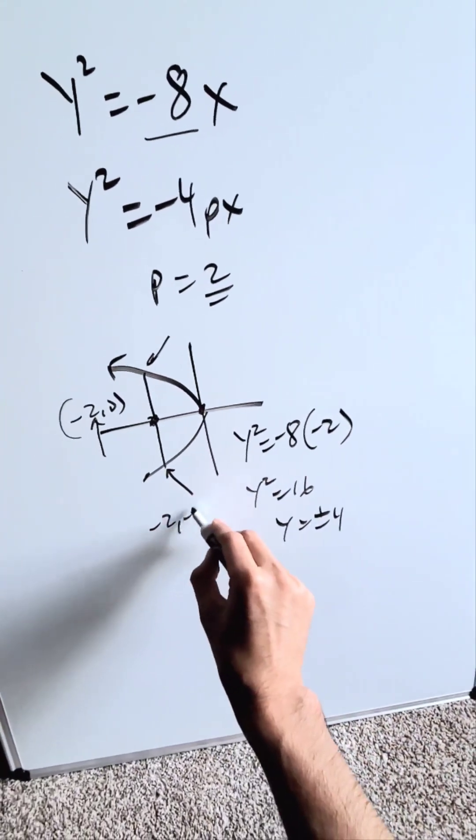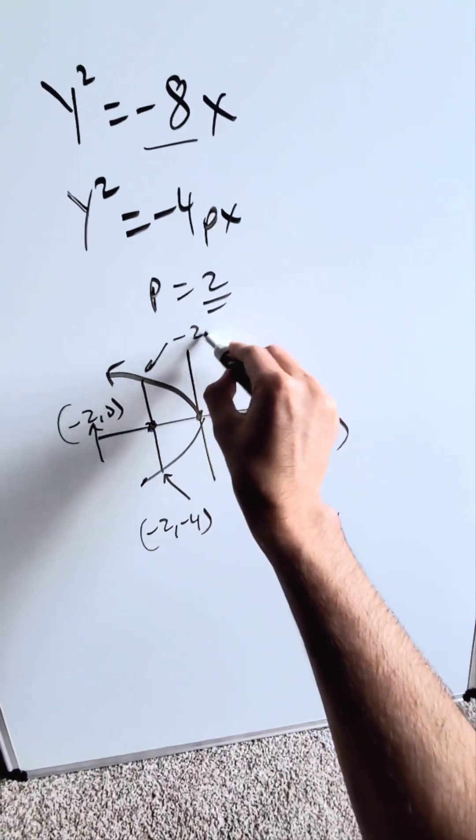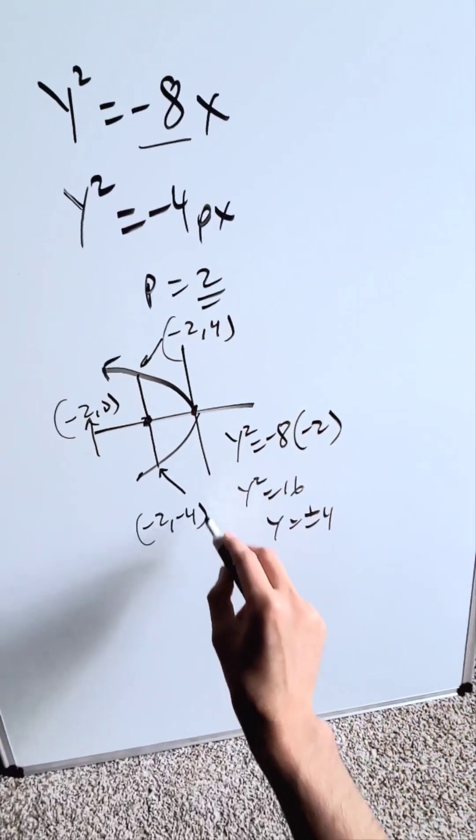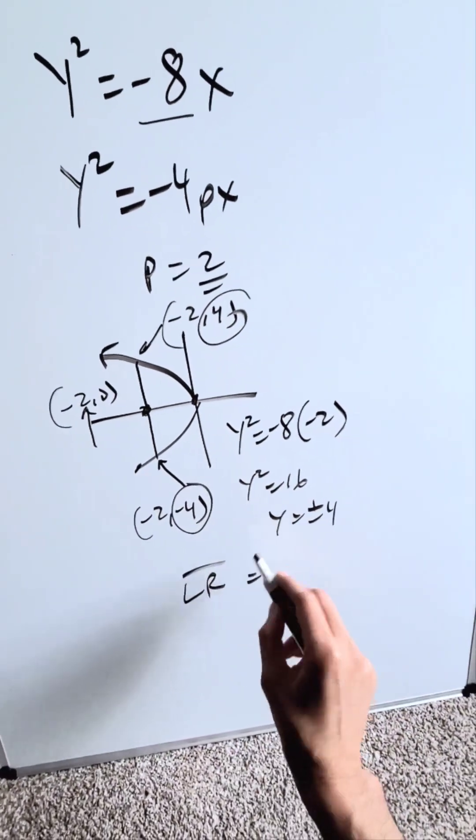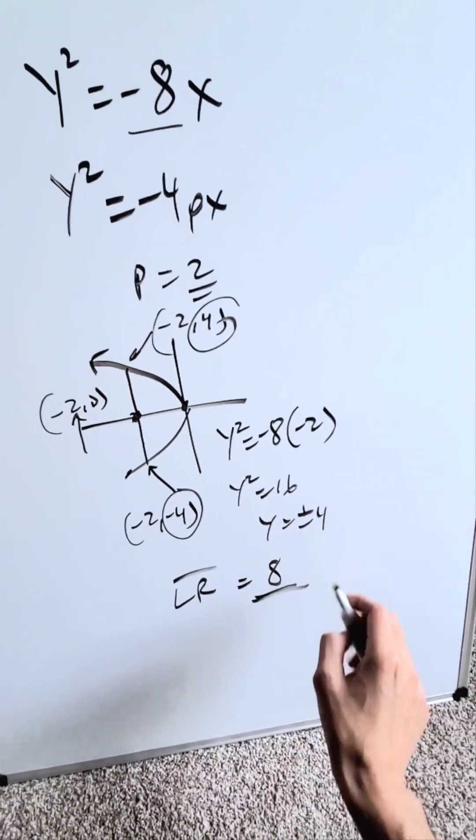Now we know this right here is minus 2 comma minus 4 and this here is minus 2 comma positive 4. Looking here only at the y values, the length of the latus rectum segment must be 4 minus minus 4 which would be 8 units.